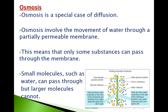The movement of water through a partially permeable membrane means that the cell membrane is semi-permeable, selectively permeable, or partly permeable. This means the membrane will only allow some substances to pass across — it selects what is allowed to enter or leave. Only small molecules such as water can pass through, while larger molecules cannot.